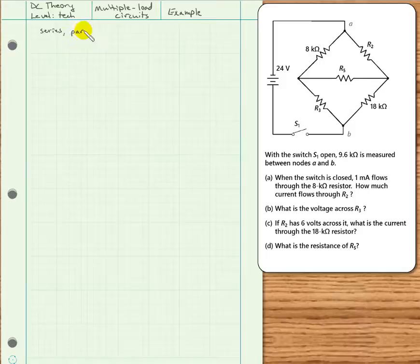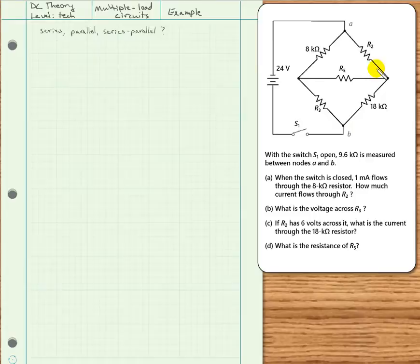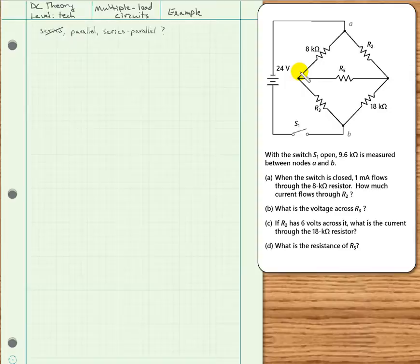We've looked at series, parallel, and series-parallel configurations so far. Can we classify this circuit into one of these? First, we notice it has no minor nodes, so it can't be series. Then we see it has only principal nodes. We might be tempted to say it's parallel, since that's a characteristic of purely parallel circuits. However, it's not a unique characteristic, so we can't use that to define it. In fact, none of the branches are between the same two principal nodes, so we can say it's not parallel.